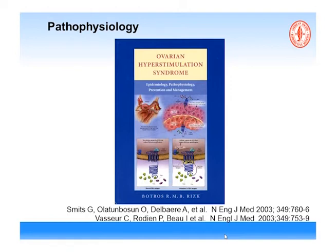On the surface of each granulosa cell there are FSH receptors. When the pituitary produces FSH, it travels to the ovary, finds the granulosa cells, and attaches to their FSH receptors. If receptors are normal, they respond only to FSH. If they are mutant receptors, they become responsive to other hormones — hormones other than FSH can stimulate the FSH receptor.